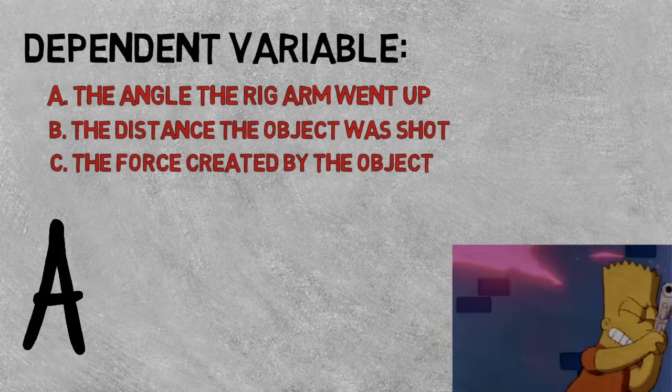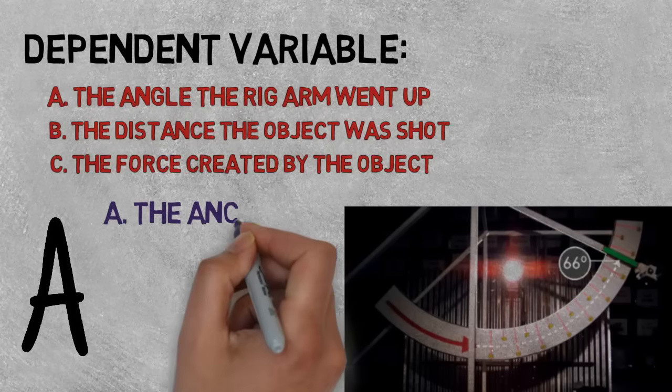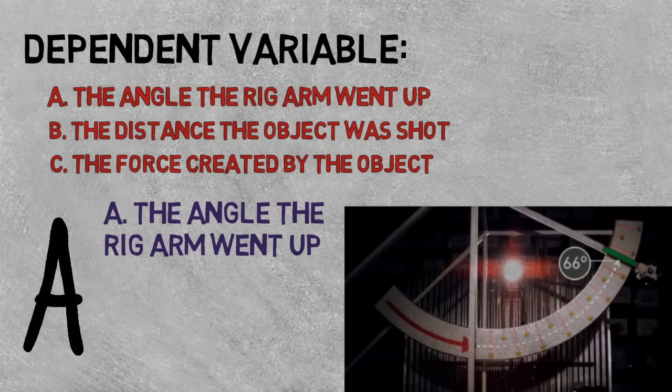The correct answer is A, the angle the rig arm went up, because it depended on whether a rock or a bullet was hitting it.